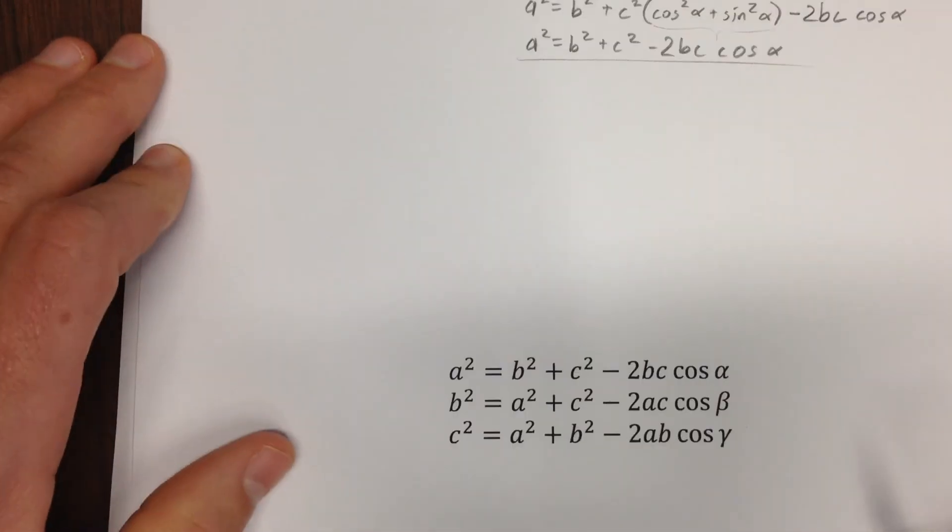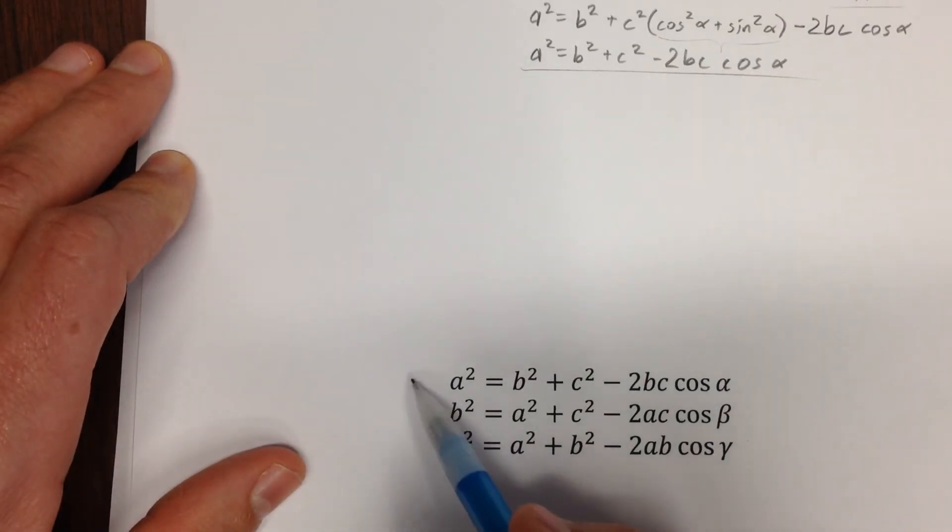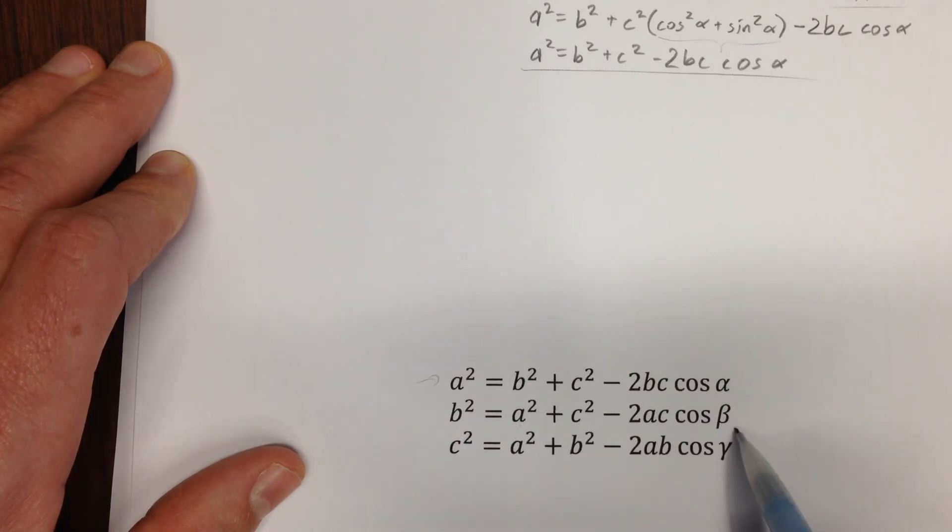Now there are actually three different forms of that. This is the form that we just created, but if you sort of rotated the things that you knew, you could find b by knowing a, c, and the angle beta, or you could find c by knowing side lengths a, b, and the angle gamma.